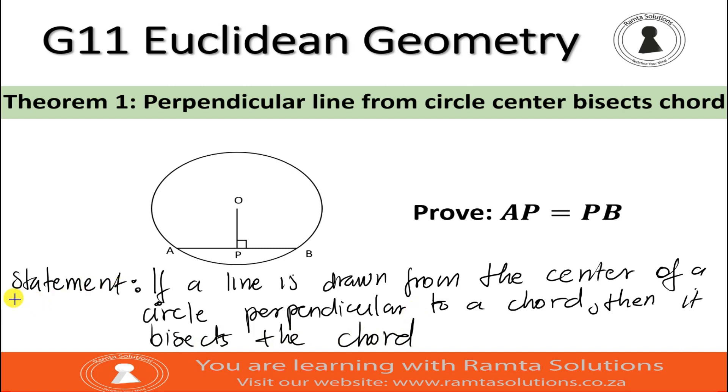I repeat, the statement says, if a line is drawn from the center of a circle, perpendicular to a chord, then it, what is that it? That line that is drawn perpendicular to the chord bisects the chord.